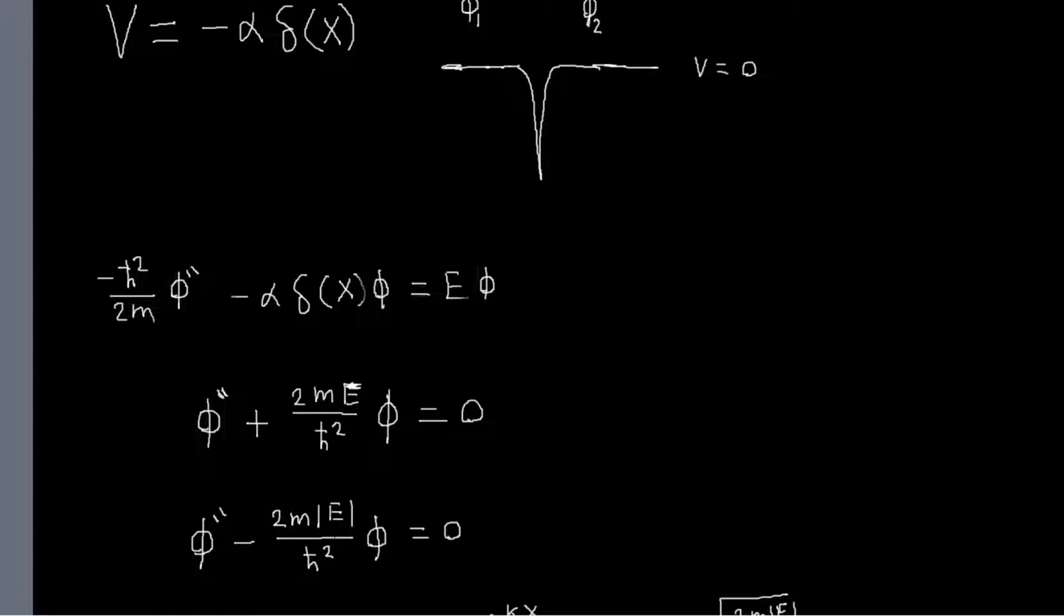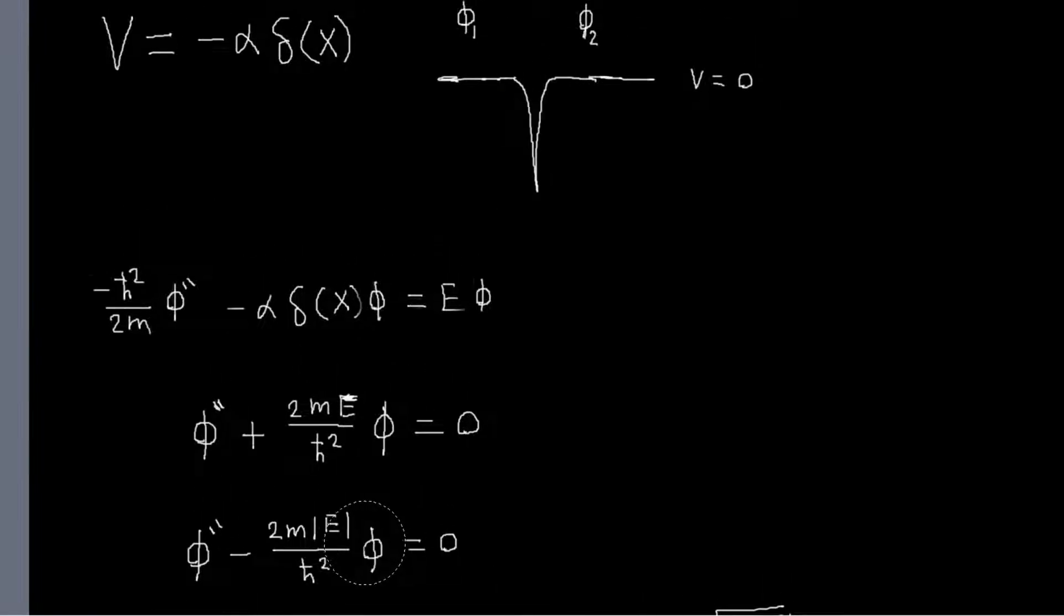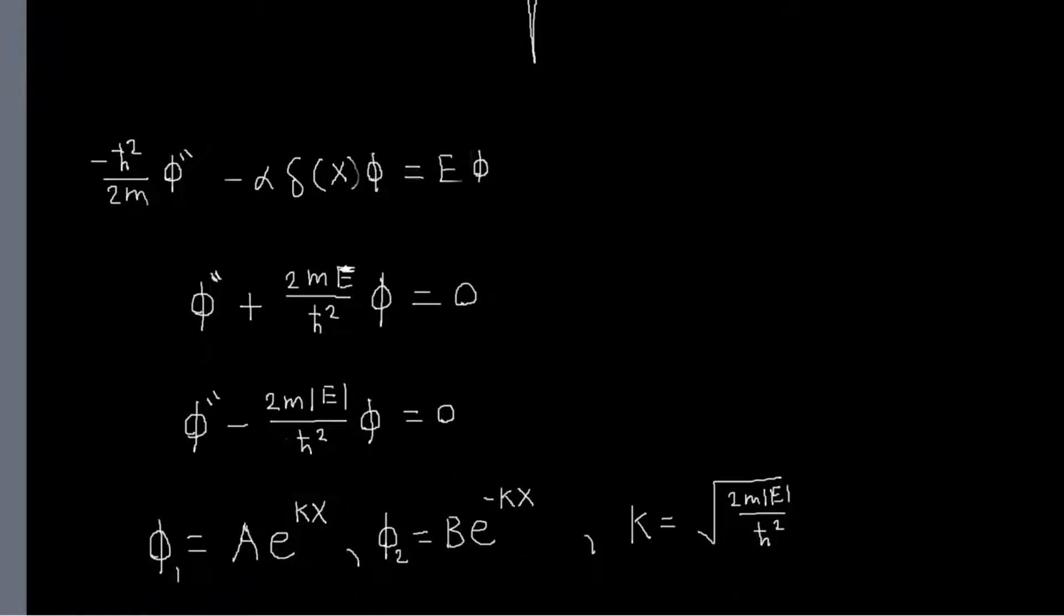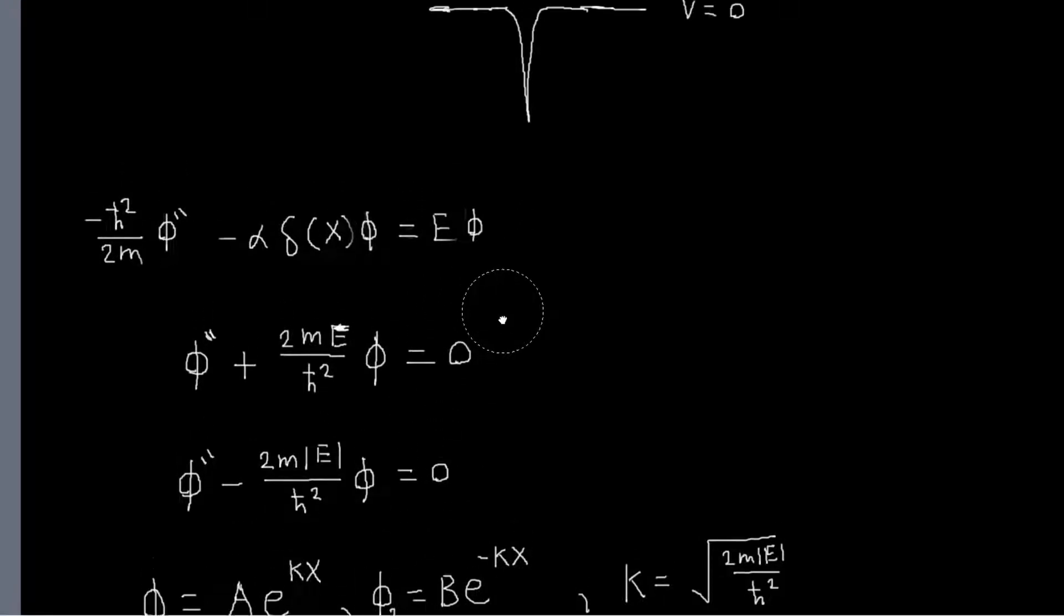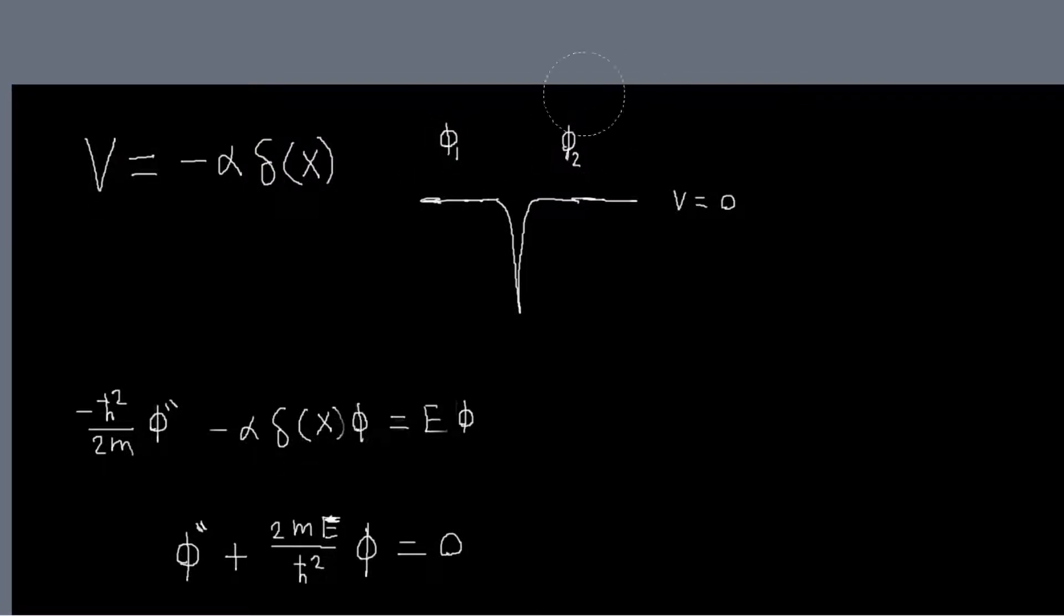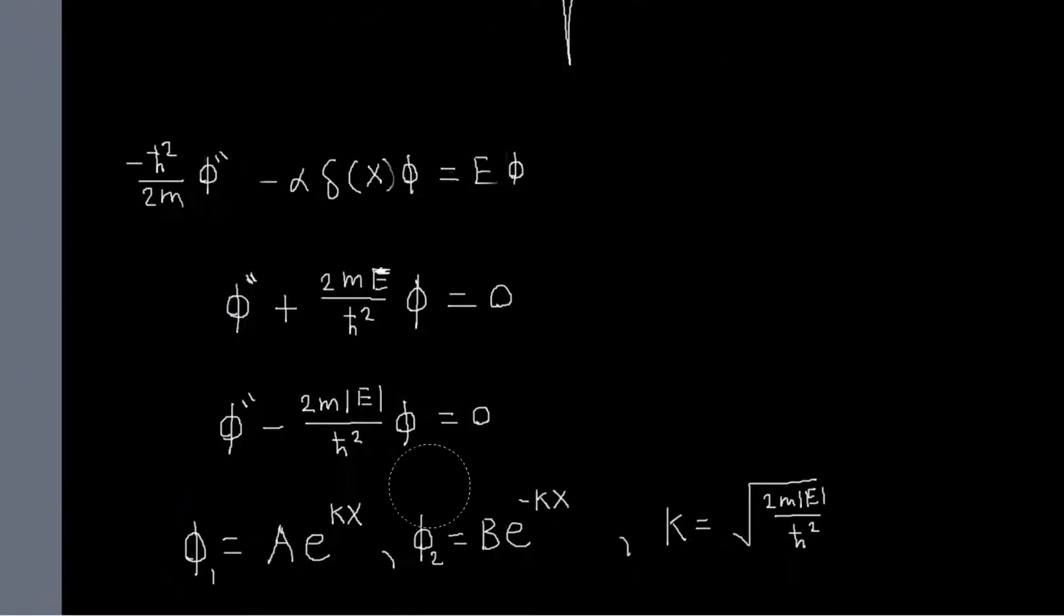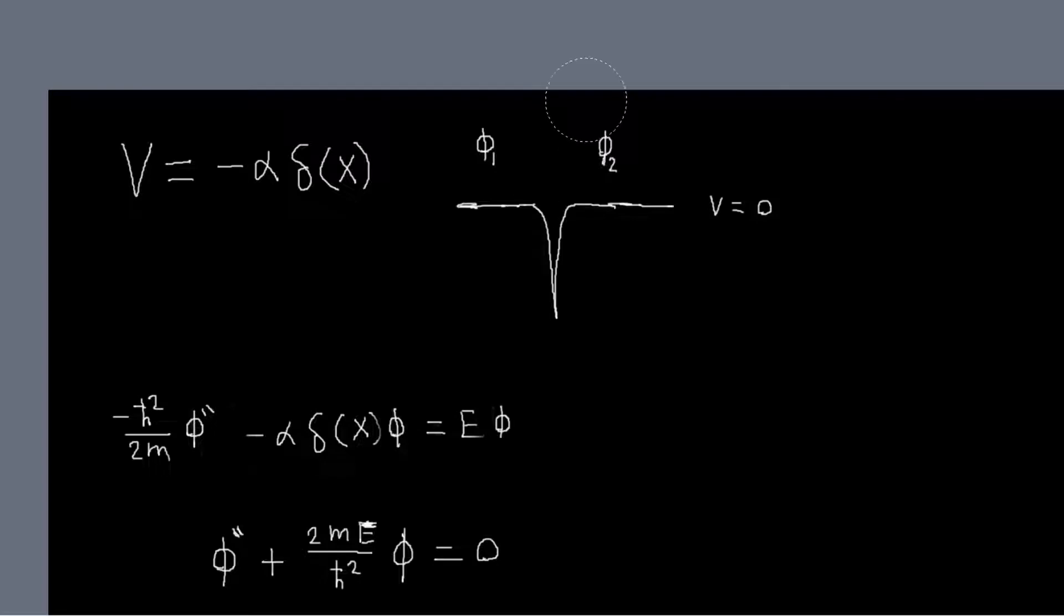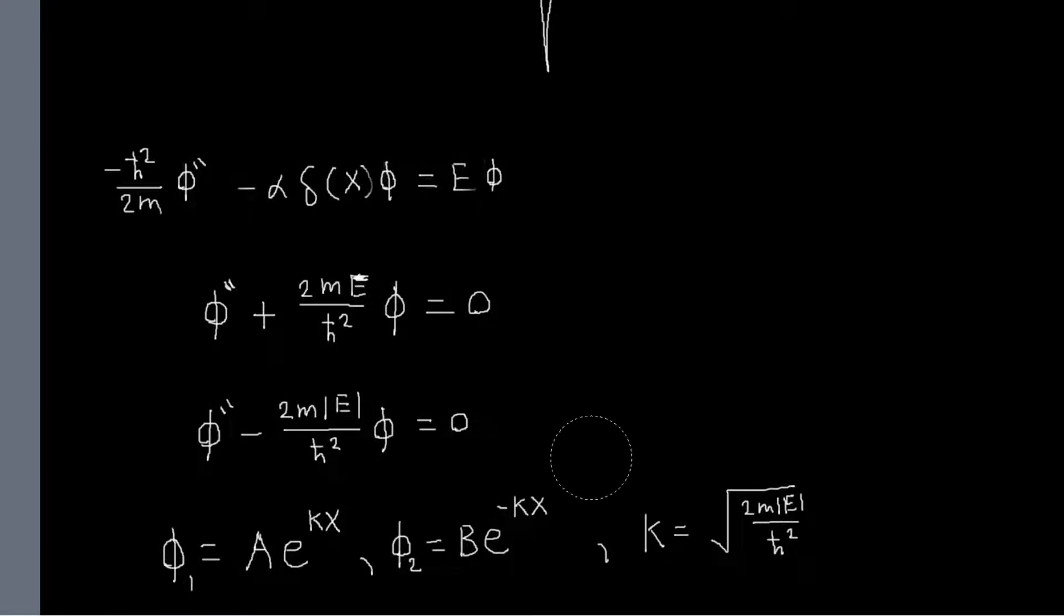And that means that our solutions to this equation will either be cosine or sine or just these exponential functions. But it's pretty obvious from our boundary conditions that we know we want our wave function to vanish at minus infinity and infinity, so that we can normalize our state, that we should just pick these exponential functions. So it'll look kind of like this. And so that's not too bad to do.